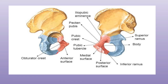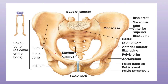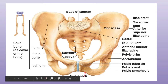The ischiopubic rami have an upper and lower border. The upper border forms part of the margin of the obturator foramen. The lower border forms the pubic arc. The pubic arc is formed by the inferior border of the right and left hip bone's ischiopubic rami.